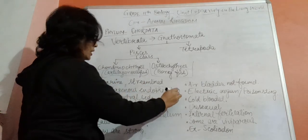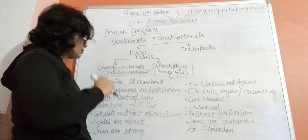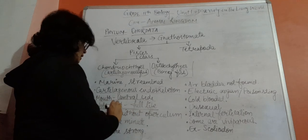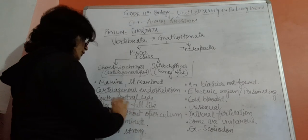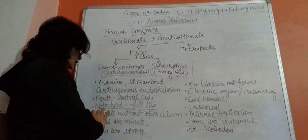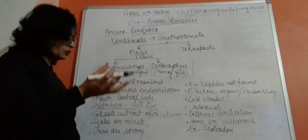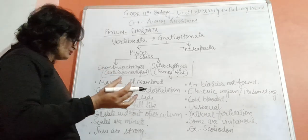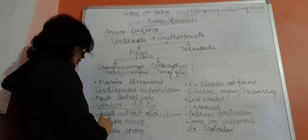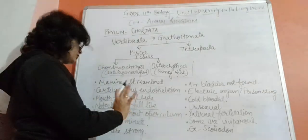The mouth is on the ventral side. Notochord is found throughout their life. Gill slits are present without operculum. The skin has minute scales which are very strong, and jaws are also strong. Some of these scales are modified into jaws.